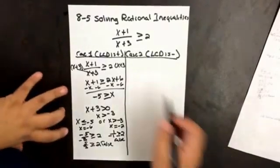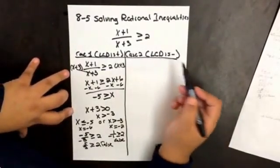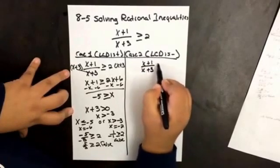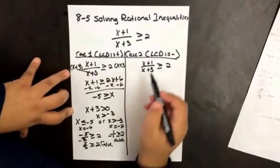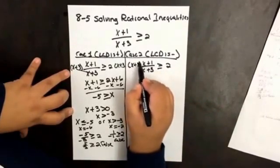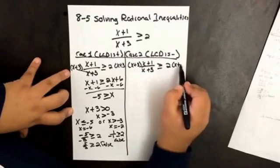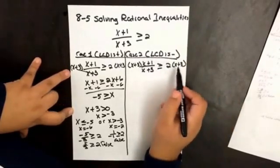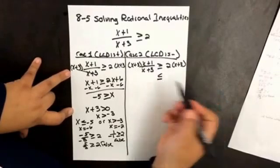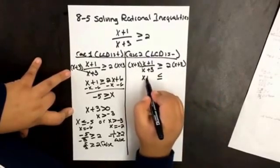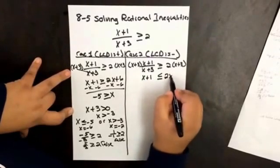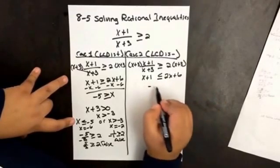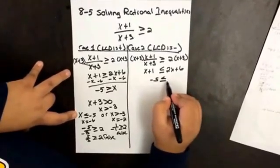Now let's go over case 2 — that's when our least common denominator is negative. If we solve for x, let's start by multiplying by x plus 3. Since the least common denominator is negative, remember that when multiplying by a negative sign, we reverse the inequality. So now we have x plus 1 is less than or equal to 2x plus 6. When we simplify, we get that negative 5 is less than or equal to x.